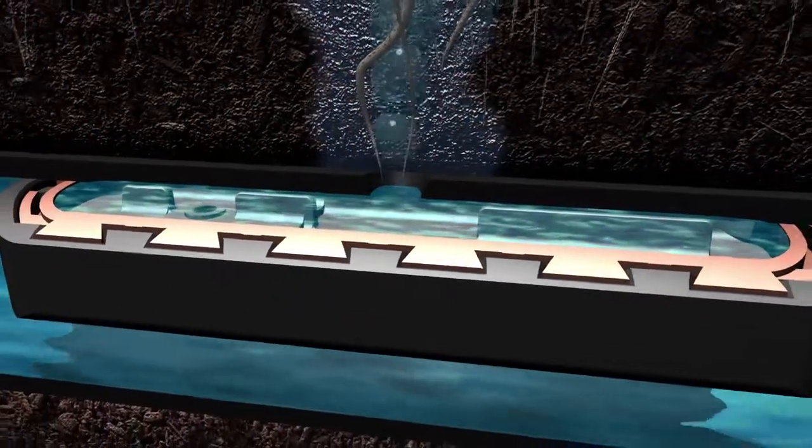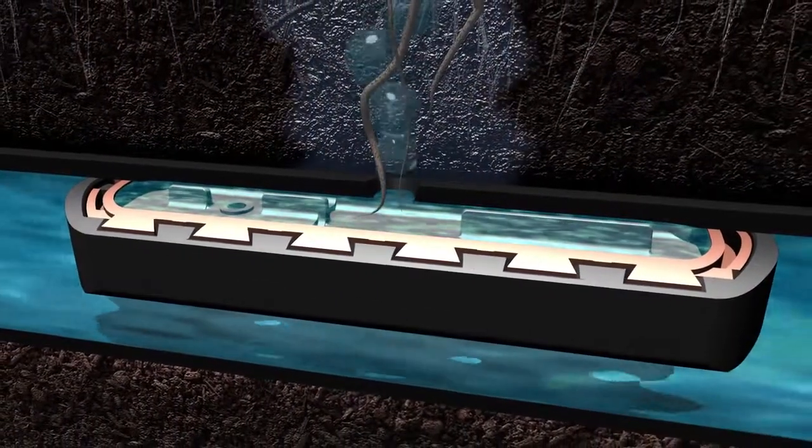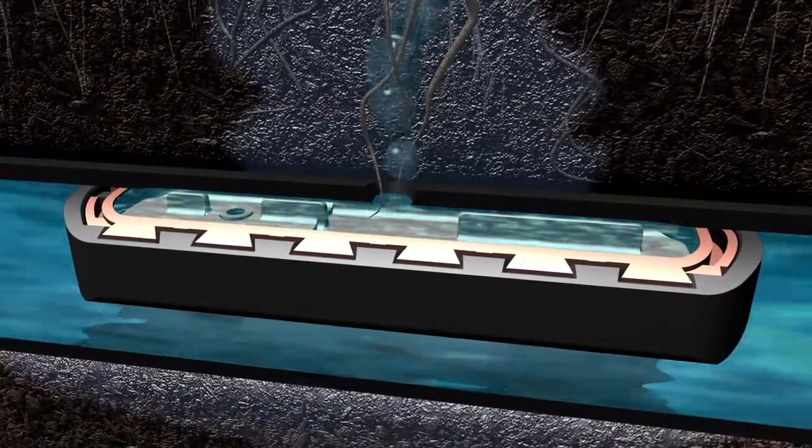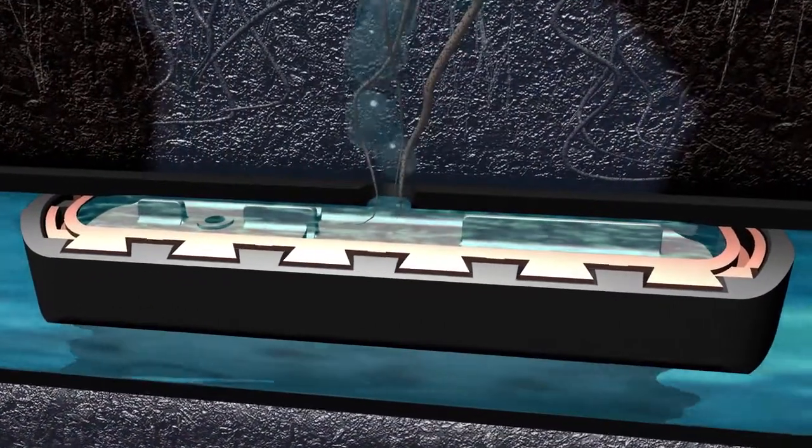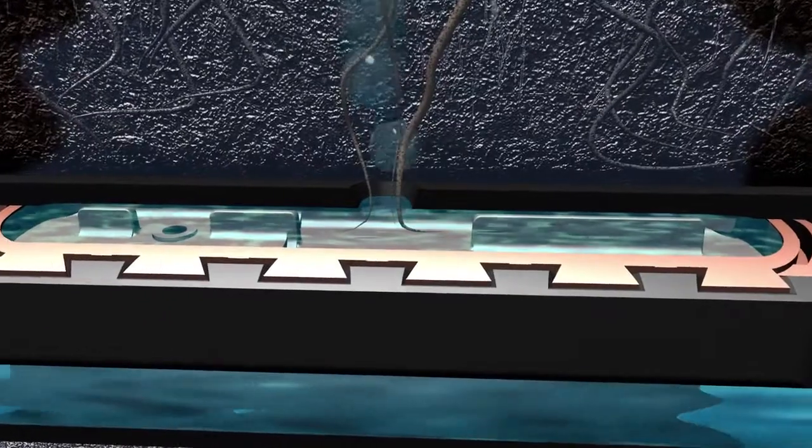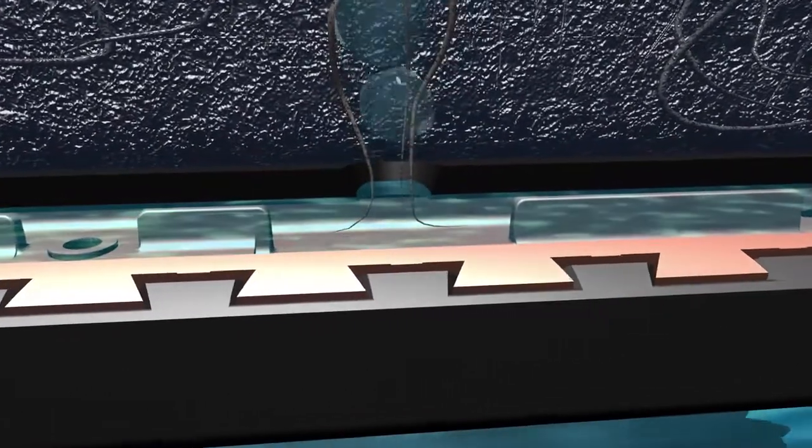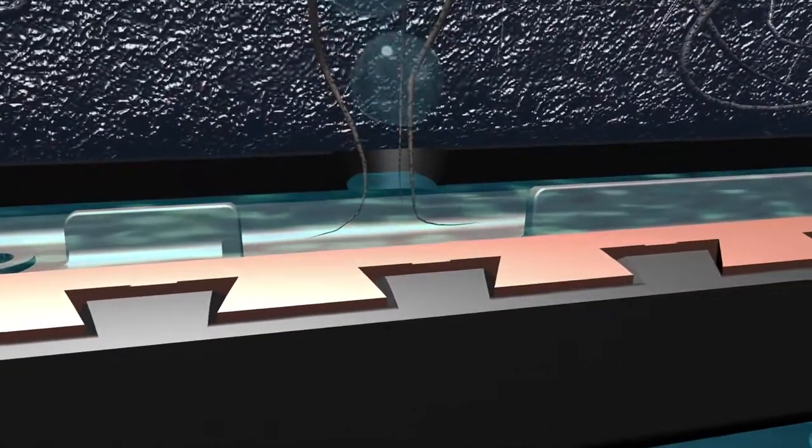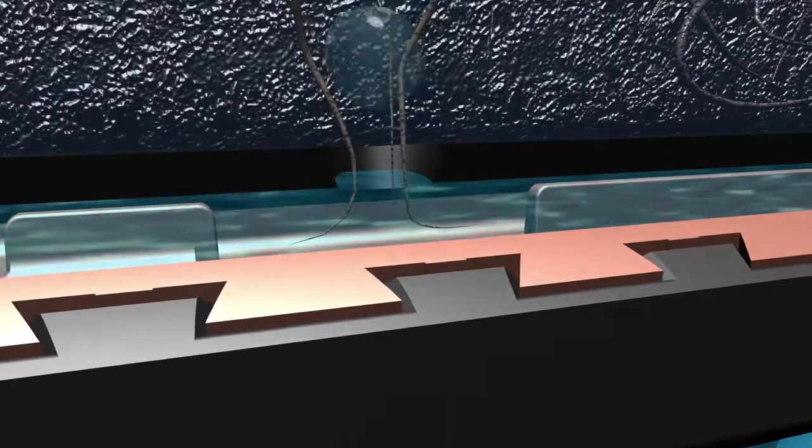By embedding copper oxide into the material used to create each emitter during the manufacturing process, the dripper line's root-resistant properties never leach out of the emitter, providing a long-lasting root barrier for subsurface drip irrigation systems.